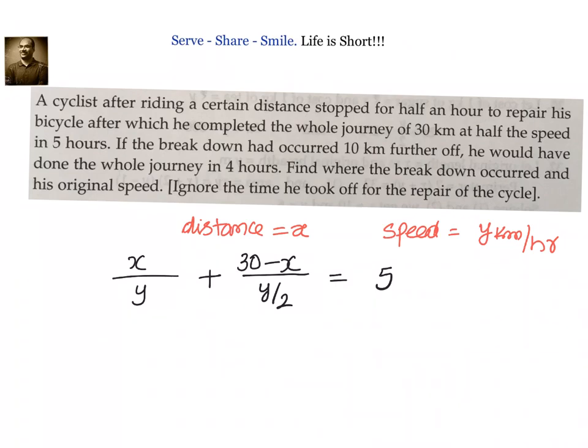Let us go to the next condition. If the breakdown had occurred 10 kilometers further off, that means x plus 10, now 10 kilometers more he was able to go with the original speed. If x plus 10 is covered, total is 30. How much is left out? 20 minus x is left out. And this distance he covered with half of the original speed. And this time it took him only 4 hours.